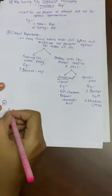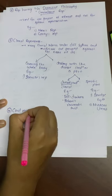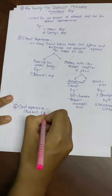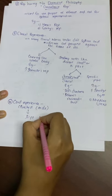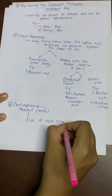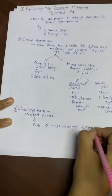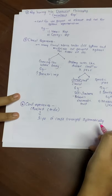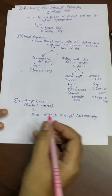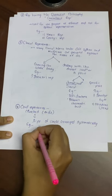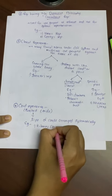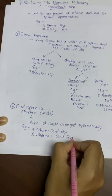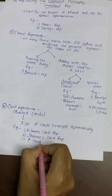The fourth type is card repertories, also called punched cards. These are slips of cards arranged systematically to facilitate the work of finding out remedies, and mostly consist of punched cards. Examples of card repertories include Kishore's Card Repertory, Sharma's Card Repertory, and P. Sankaran's Card Index.